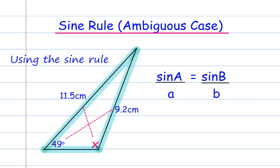Using the formula sheet, sin A over a equals sin B over b. So using the information from the diagram, sin X over 11.5 equals sin 49 over 9.2. Multiply both sides by 11.5 to give you sin X equals 11.5 sin 49 over 9.2.